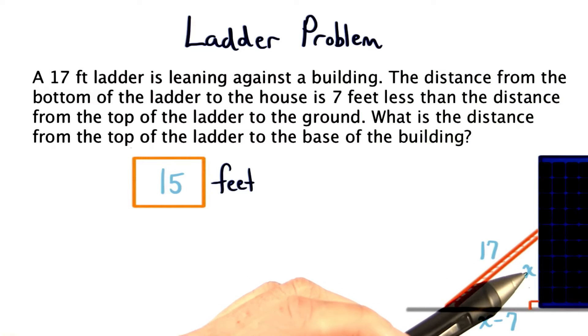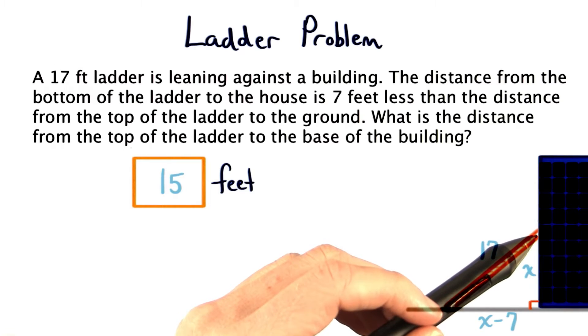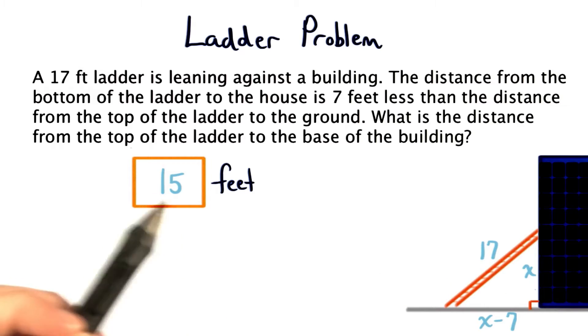When we use the Pythagorean theorem to solve, we'll find that this distance from the top of the ladder to the base of the building is 15 feet. Great solving if you found it.